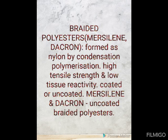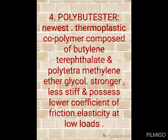Moving on to braided polyesters, with examples being Mersilene and Dacron. Polyester fibers are polymers formed by condensation polymerization, similar to nylon. They were manufactured to provide the same high tensile strength and low tissue reactivity as monofilaments, but with improved handling and knot security. Polyester sutures are either coated or uncoated — Mersilene and Dacron are uncoated braided polyesters.